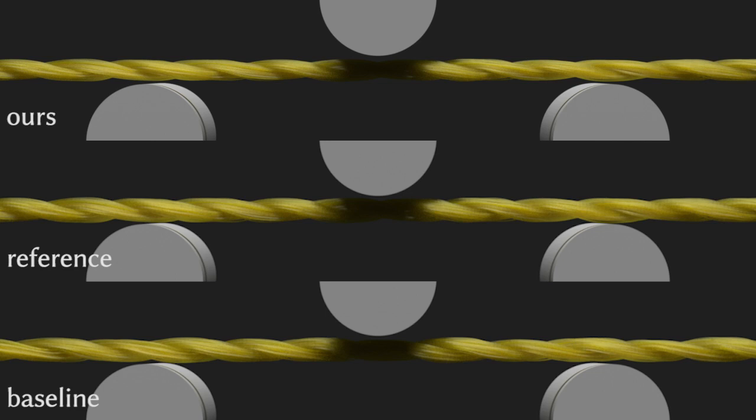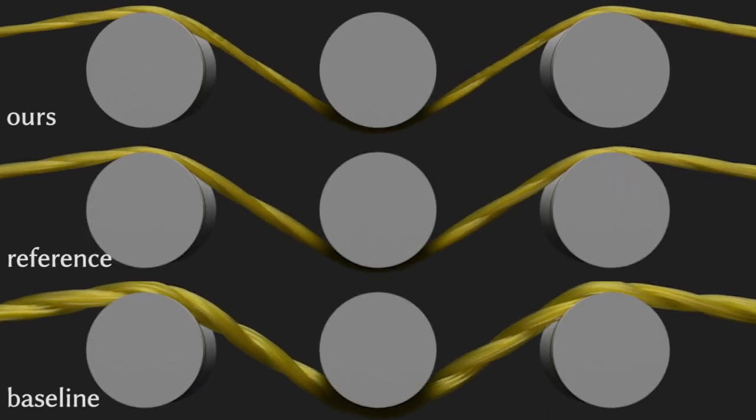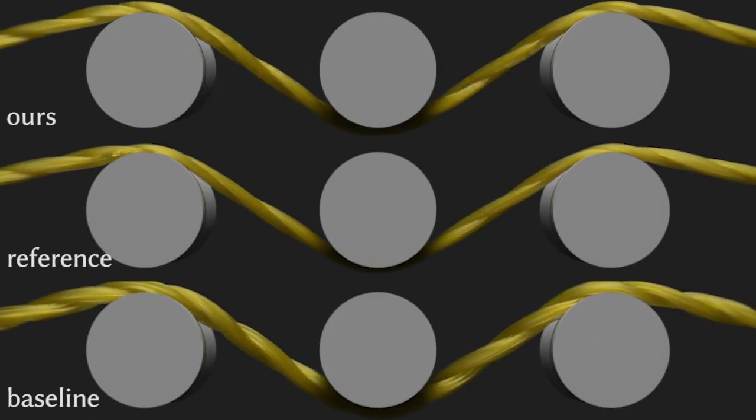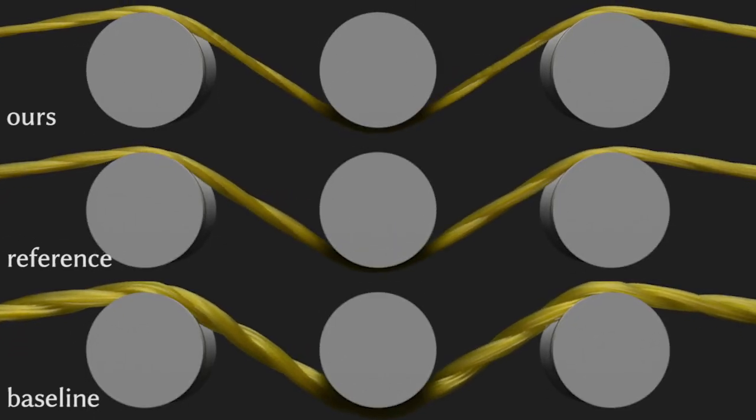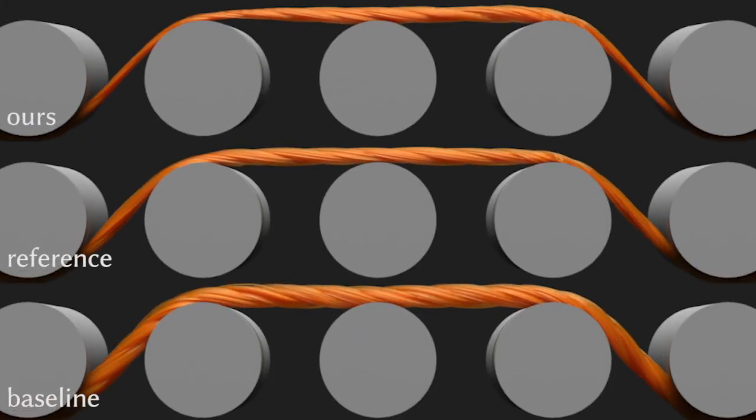In the following examples, a yarn is compressed by a few rigid cylinders, causing complex and spatially varying deformations. Our results obtained using only yarn-level simulations successfully match the fiber-level simulated references accurately, while the baseline solution which ignores fiber mechanics failed.